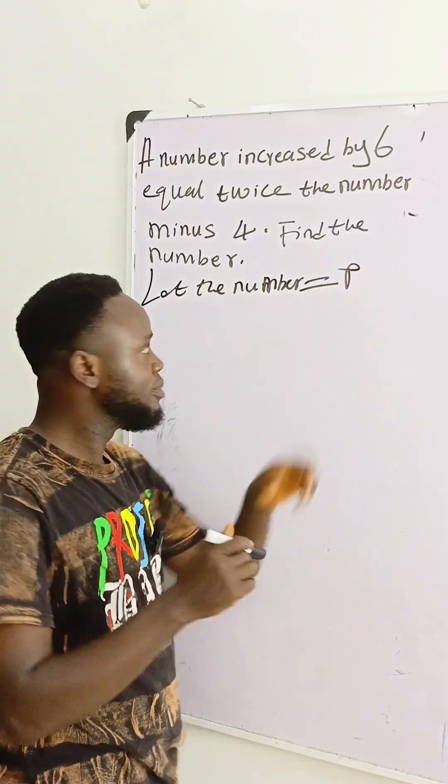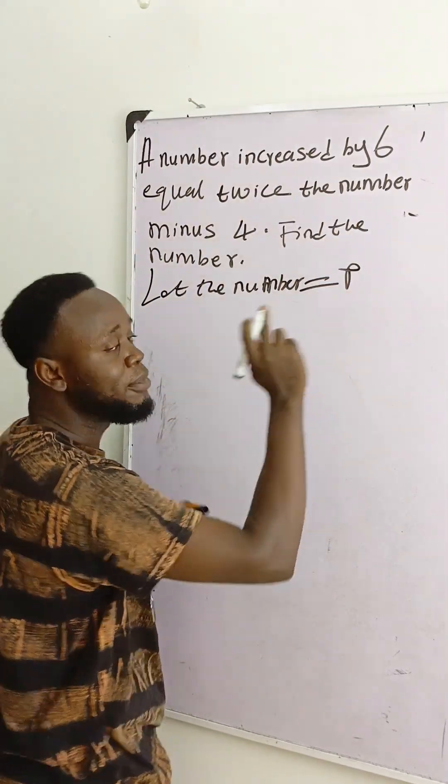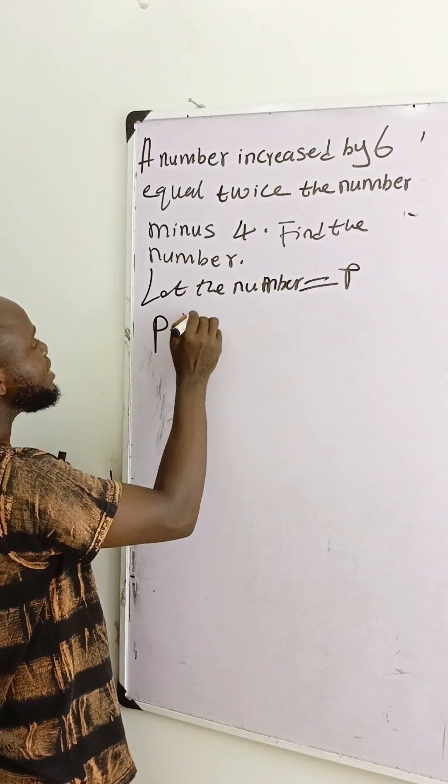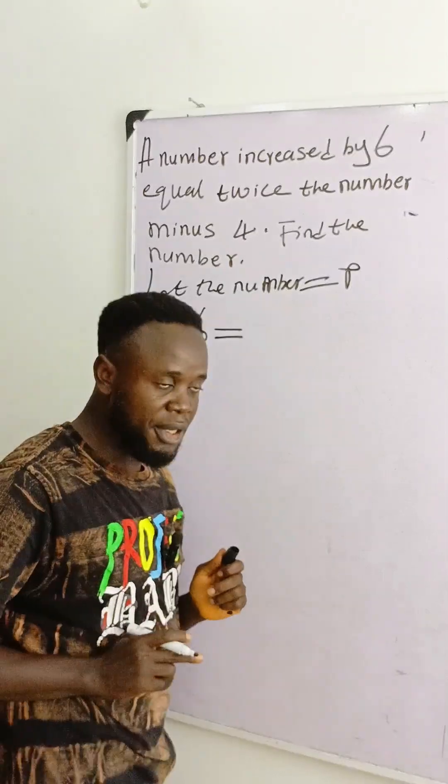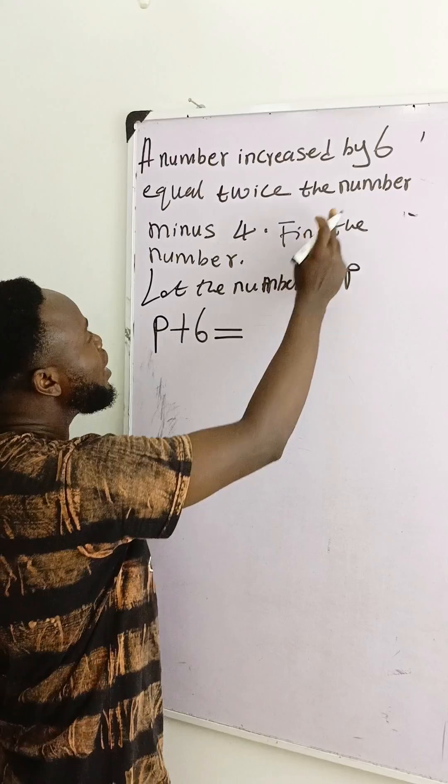the number is P, then the number is increased by six. Increasing by six means adding six to that particular number. We have called it P. It equals twice the number. It means that if you add